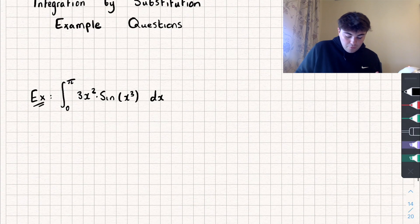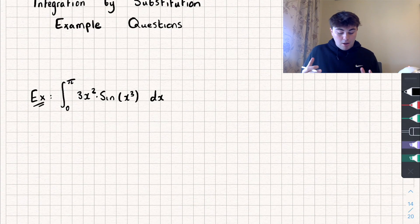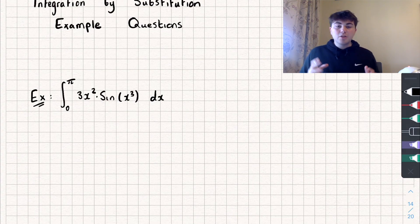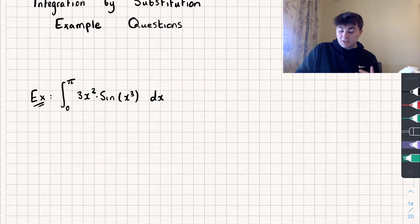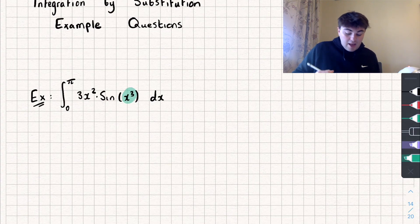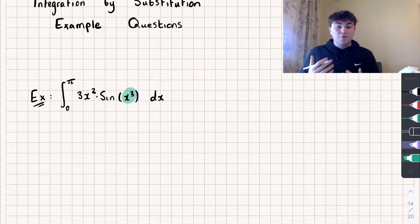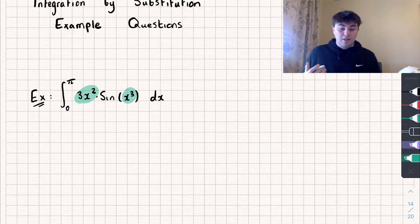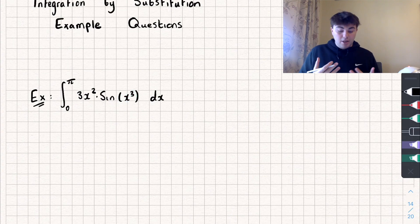Let's start off with the first question, where we want to integrate between the limits of 0 and π of 3x squared multiplied by sine of x cubed with respect to x. The first step is to select part of this to be equal to u for the substitution. If I set x cubed equal to u, when I differentiate that I'll get 3x squared, which is going to cancel with that part — so that looks like a good substitution.